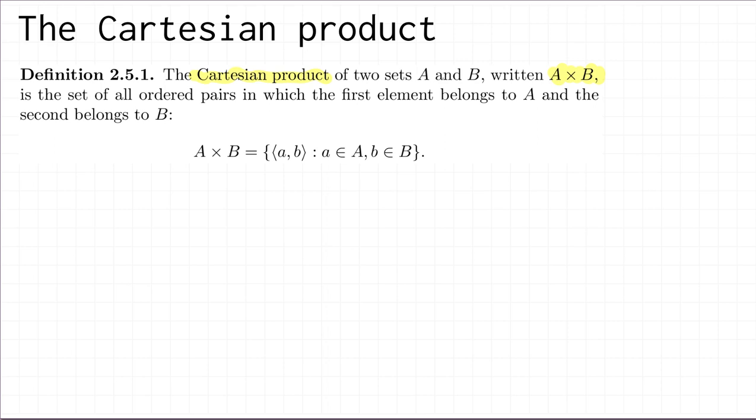That's defined to be the set of all ordered pairs where the first element of the ordered pair comes from the set A and the second element comes from the set B. So in symbols, the Cartesian product A × B is the set of all ordered pairs (a,b) where a comes from A and b comes from B.